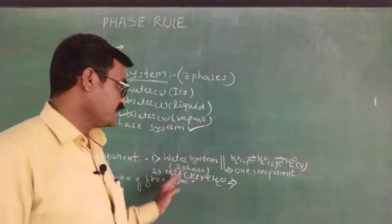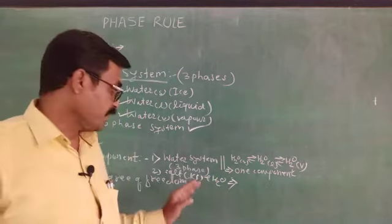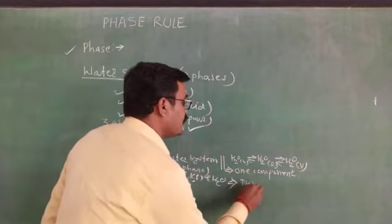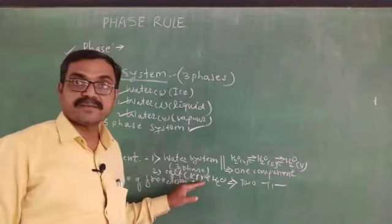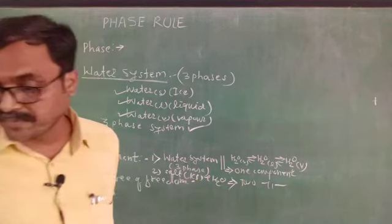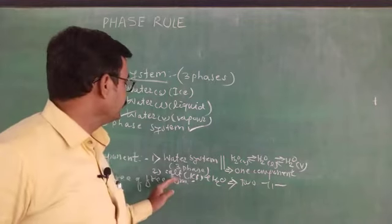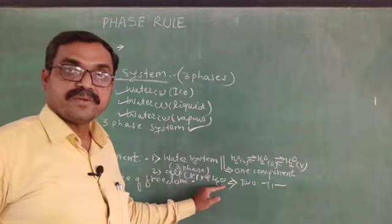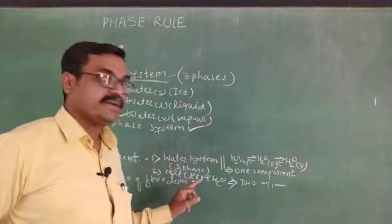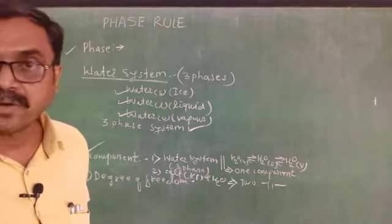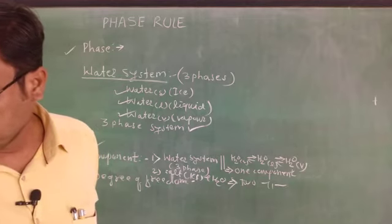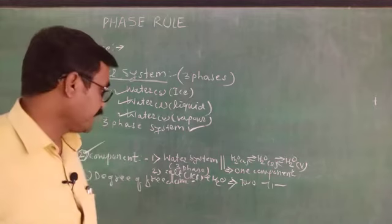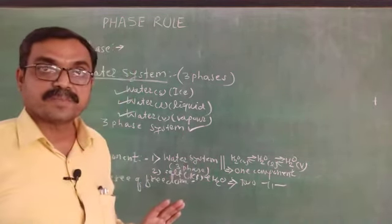In the salt-water system, how many phases are there? If we consider salt and water, there are four phases: solid salt, solid H2O (ice), the solution (liquid), and vapor. All phases can be expressed in terms of two individuals, KI and H2O. That is why it is a two-component system.